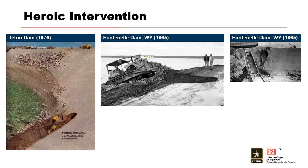Two examples of heroic intervention at dams are shown on this slide with dramatically different results. A very serious failure of a large portion of the embankment on the left side of the spillway occurred at Fontanelle Dam, as shown in the two figures on the right. Reclamation was able to lower the reservoir nearly four feet per day due to significant release capacity until erosion waned and stopped. The reservoir volume at the time of the incident was approximately 300,000 acre feet.